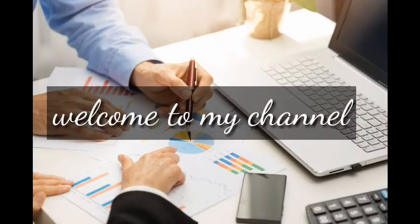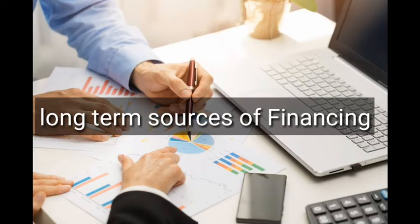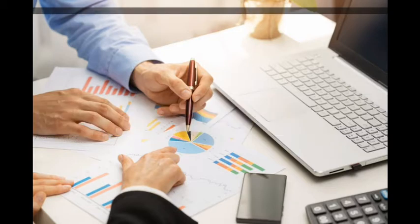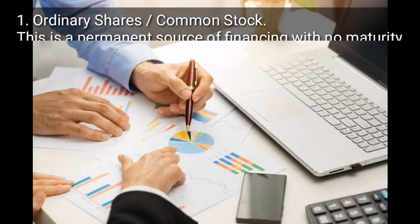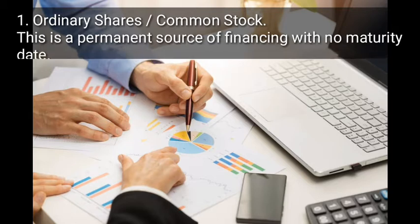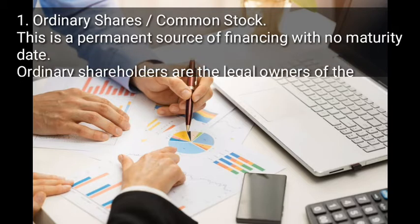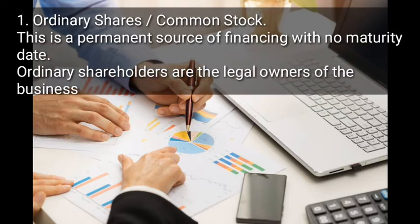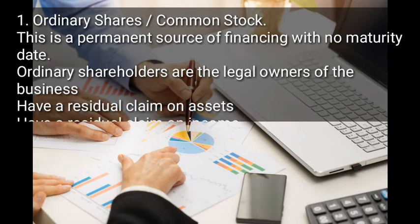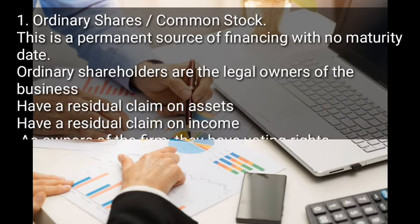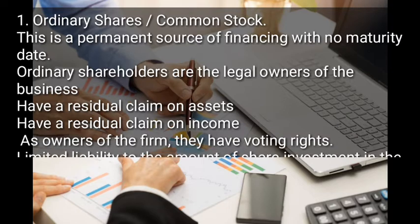Welcome to my YouTube channel. In this video we shall be talking about the long-term sources of financing, the advantages and the disadvantages. The first long-term source of financing that we have is ordinary shares, which is the same as common stock. Ordinary shares is a permanent source of financing with no maturity debt.